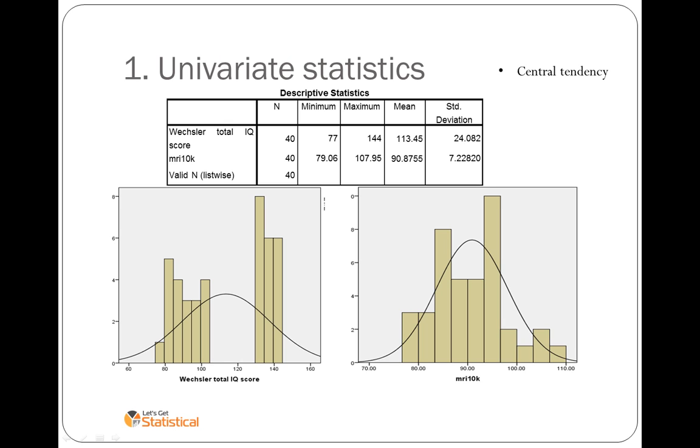Looking for central tendency, that is a point which peaks around the middle, which it does here. Variability, so having a wide range of variation in the scores. Skewness, slightly skewed on the right hand side but otherwise looking fairly normal. Kurtosis, not too pointy or not too flat, and it is by and large unimodal with one single point.